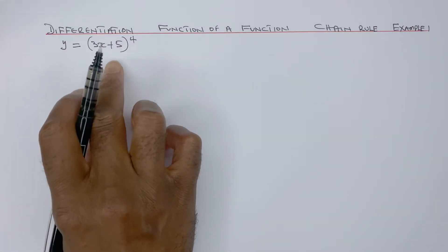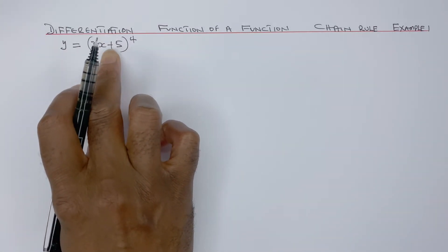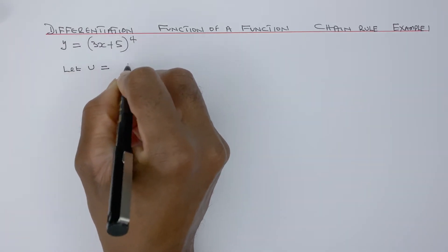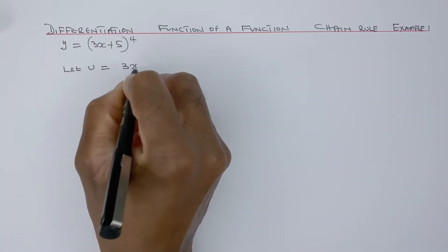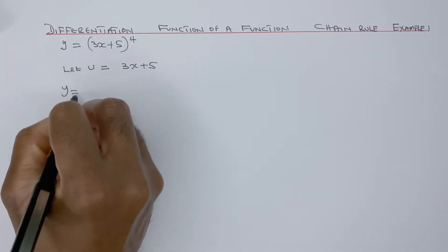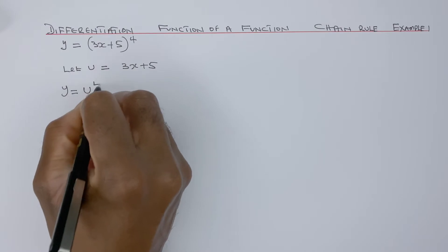We can apply the chain rule to this function. Let u equals 3x plus 5, therefore y equals u to power 4.